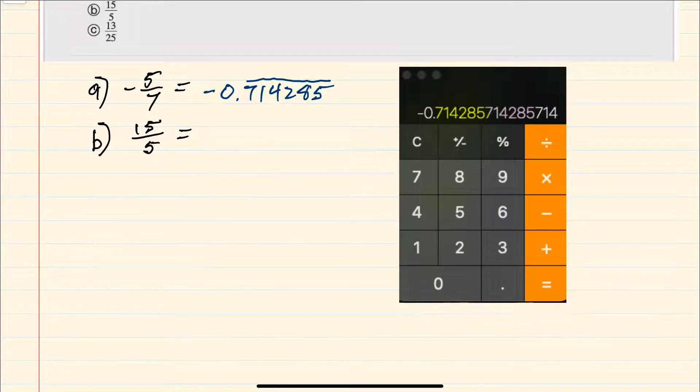we're given 15 over 5, and since 15 is divisible by 5, we can simplify this to just be 3. Or if we're trying to indicate the decimal places, we could say 3.0. Either way, this terminates, so this is a terminating decimal. 13 over 25 is our next question,